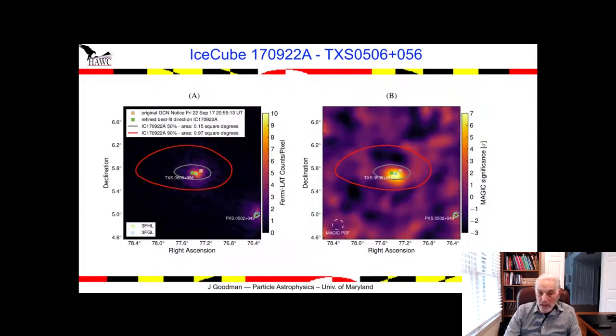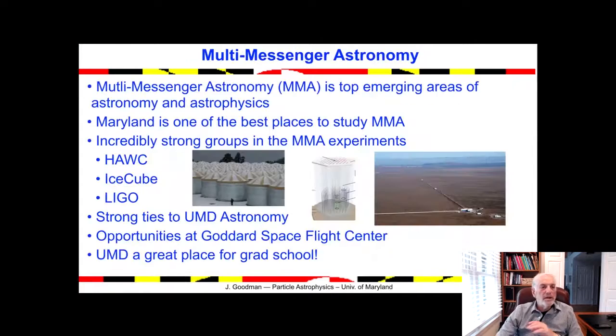One of the most exciting discoveries was that they saw one of these really high energy neutrinos in coincidence with a flaring AGN. The fact that the gamma ray telescopes could say it was flaring and they saw this neutrino is another example of multi-messenger astronomy. In conclusion, multi-messenger astronomy is one of the top emerging areas of astronomy and astrophysics.